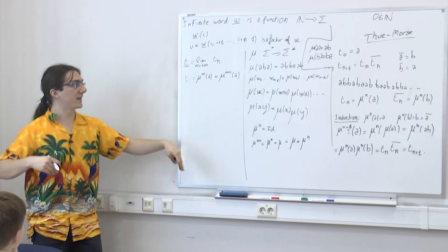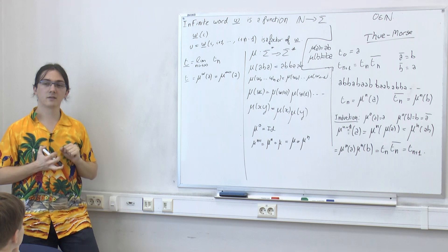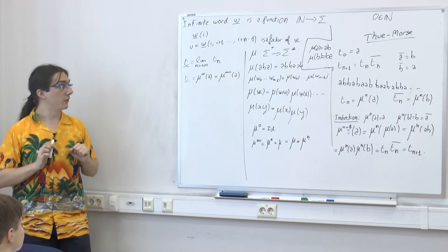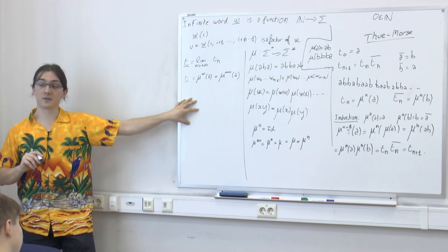Even if morphisms don't erase letters, you could still have problems — for instance if mu(a) = b and mu(b) = a, the length won't grow, so you'll have issues. This sufficient condition is good enough for all the morphisms we like to use in this lecture.